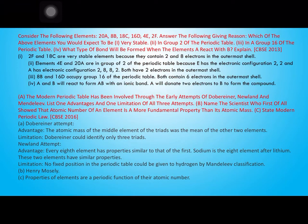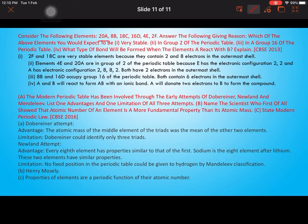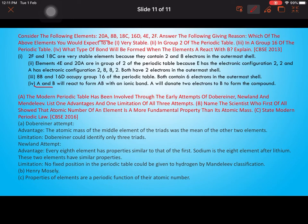Consider elements: 20A, 8B, 18C, 16D, 4E, 2F. The most stable elements are 2F and 18C because their octets are already complete. Elements 4E (2,2) and 20A (2,8,8,2) belong to group 2 of the periodic table. Elements belonging to group 16 are 8B (2,6) and 16D (2,8,6). When element A reacts with B, an ionic bond is formed — for example, similar to calcium oxide (CaO), since A has 2 electrons and B has 6 valence electrons.